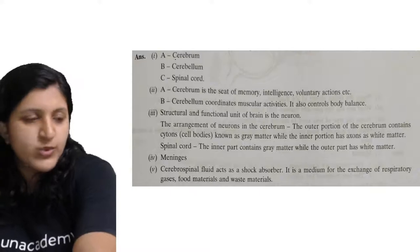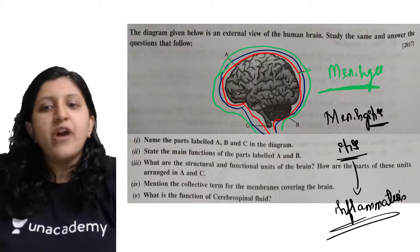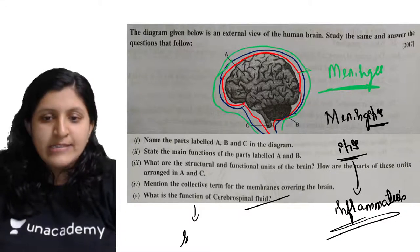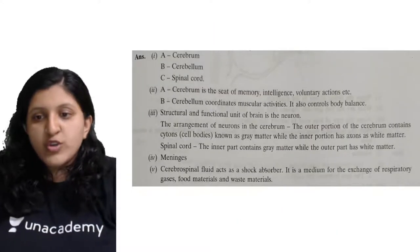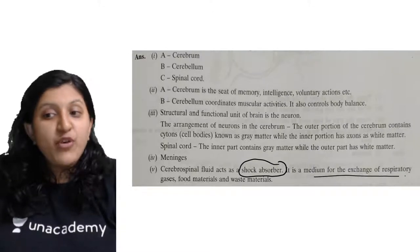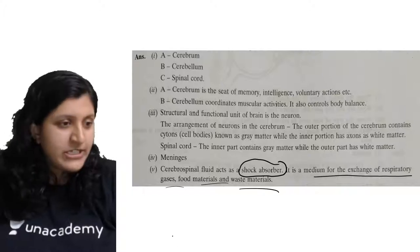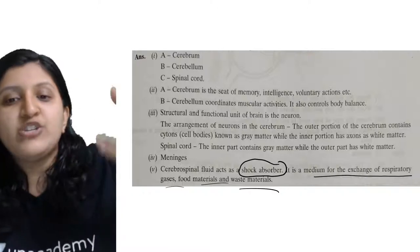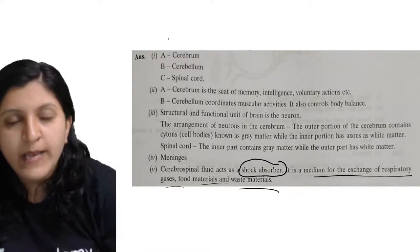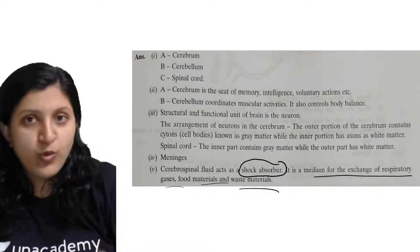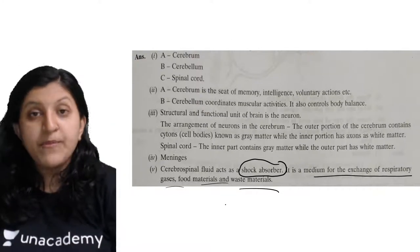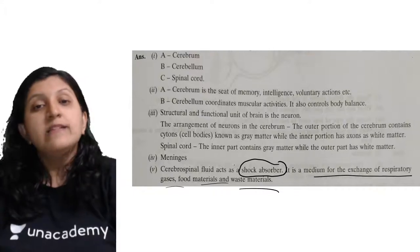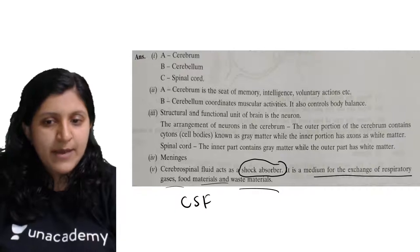The function of cerebrospinal fluid (CSF) is to act as a shock absorber, providing protection against mechanical injury. It is also the medium for the exchange of respiratory gases, food materials, and waste materials — supplying oxygen and glucose to the brain and removing carbon dioxide and waste.